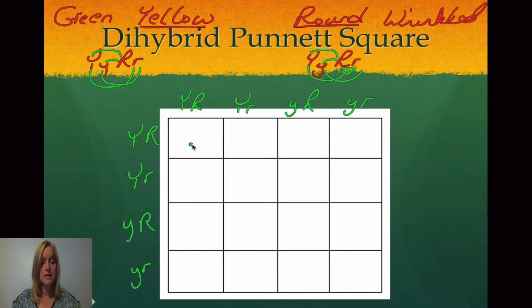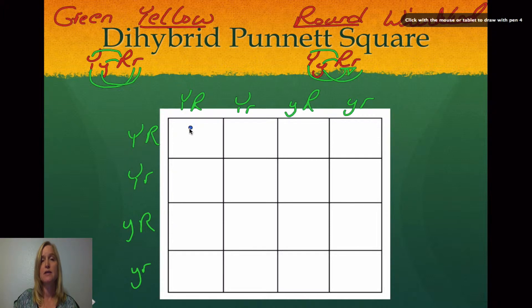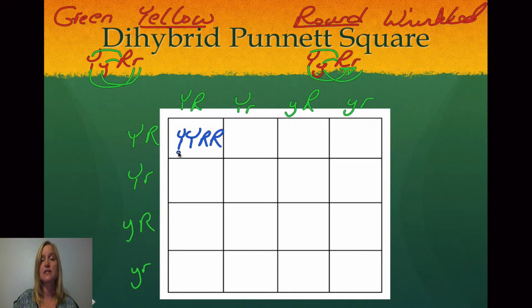When you go to fill in these boxes, instead of putting Y, R, Y, R in the order they come, it will be much easier to read later if you put your Y's together and your R's together. You'll notice here this makes it really easy to see that this is homozygous dominant for the yellow seed and homozygous dominant for the round seed. I'm going to go through and fill in the rest of these boxes.